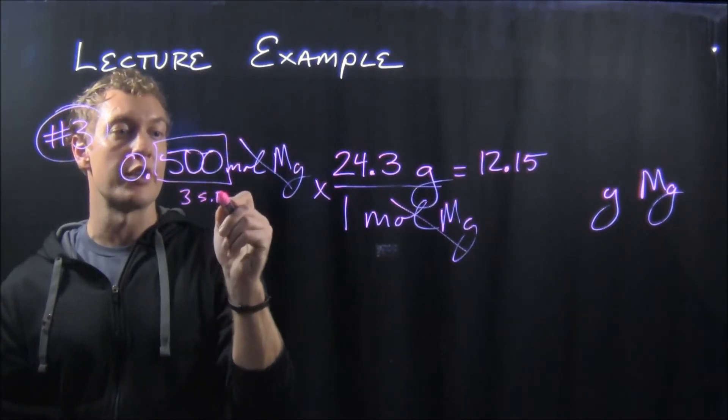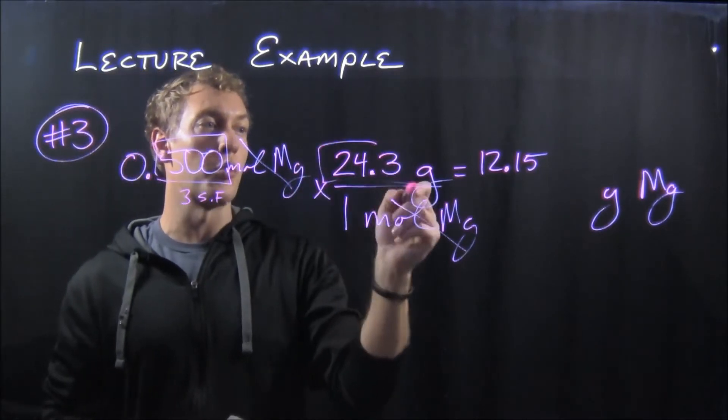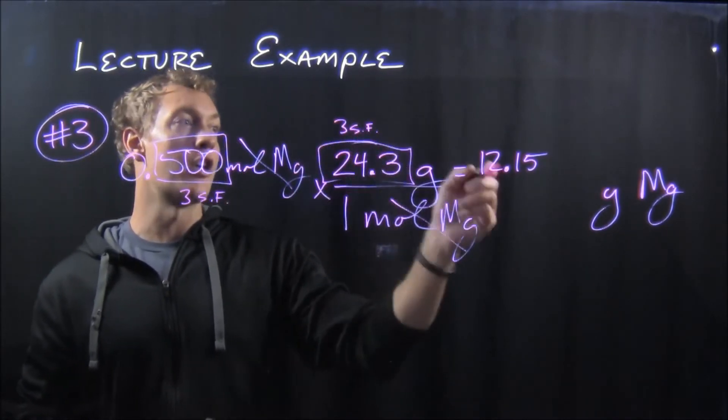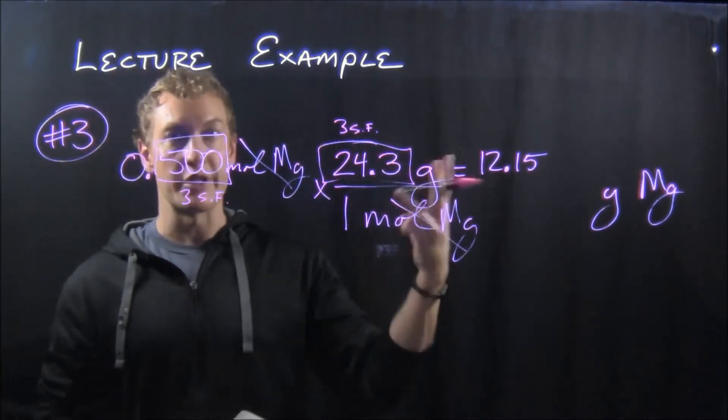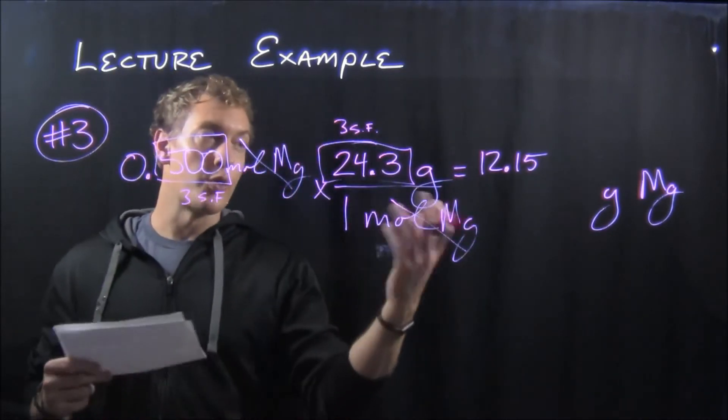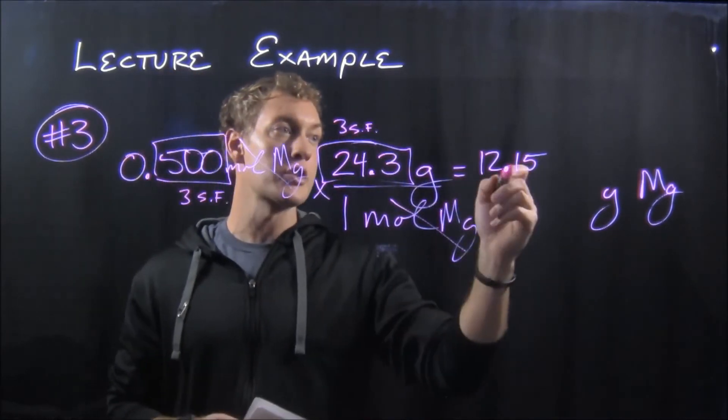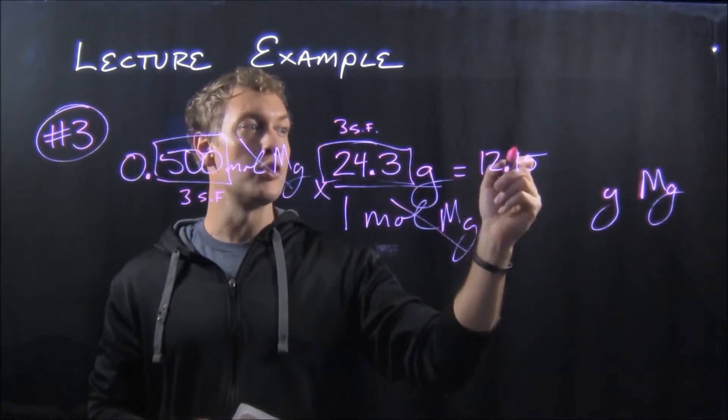Now for significant figures, since 0.500 has three significant figures and we use 24.3 grams, which is also three significant figures, in our answer we would only keep three significant figures.